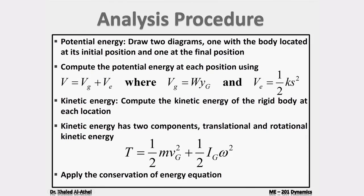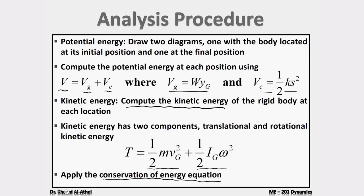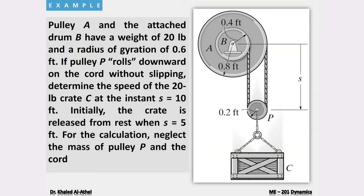The analysis procedure starts with drawing two diagrams — one with the body at its initial position and one at the final position — showing the datum, lengths, and forces. Then compute the potential energy at each position (Vg and Ve separately, then add them). Next compute the kinetic energy, which may have translational and rotational parts, and finally apply the conservation of energy equation.